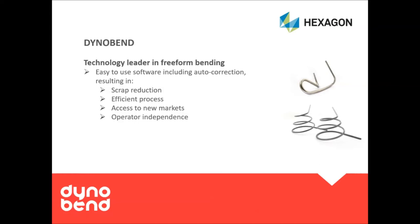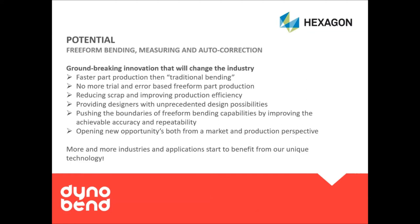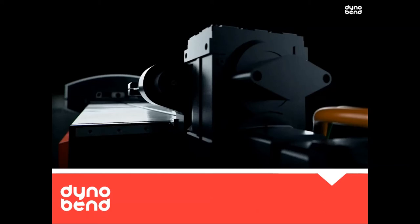Corrections can be done for a particular part, but you can also use the correction to compensate for batch material variances. This groundbreaking innovation will change the industry, pushing the boundaries of freeform bending. Where freeform bending was always associated with more artistic applications, the simple, accurate, repeatable, and reliable process means many high-end industries are also benefiting — we have a proven track record in the medical industry, power chairs, and furniture industry. Besides design possibilities, freeform bending is also a much faster way of production.